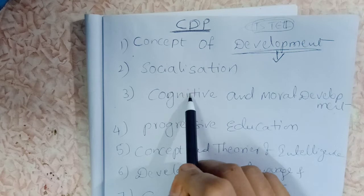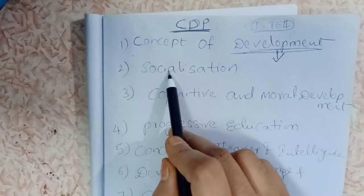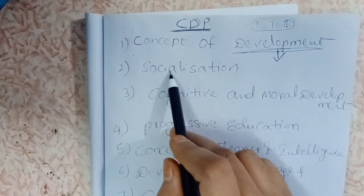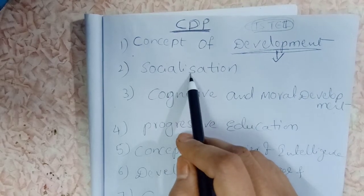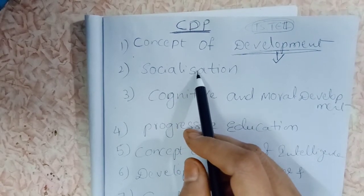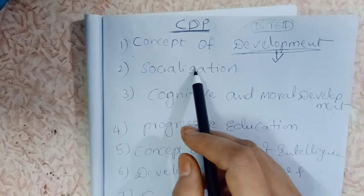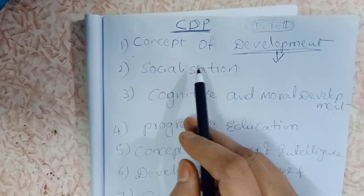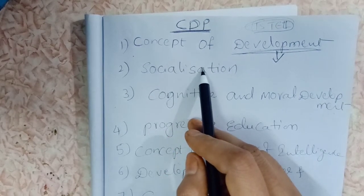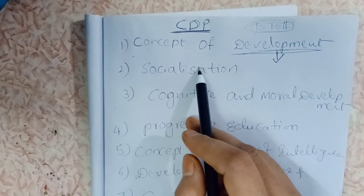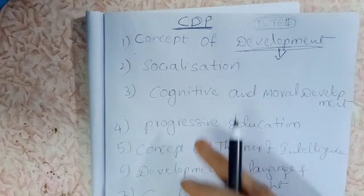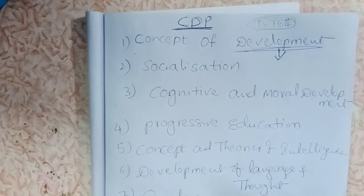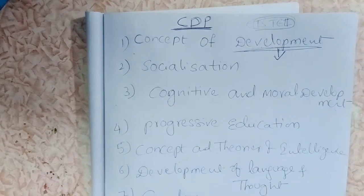Many more topics are present under socialization, such as agents of socialization, social development, peer group socialization and education, gender socialization and education, and supporting the learner's personal and social development. This subject is very interesting and also somewhat confusing.